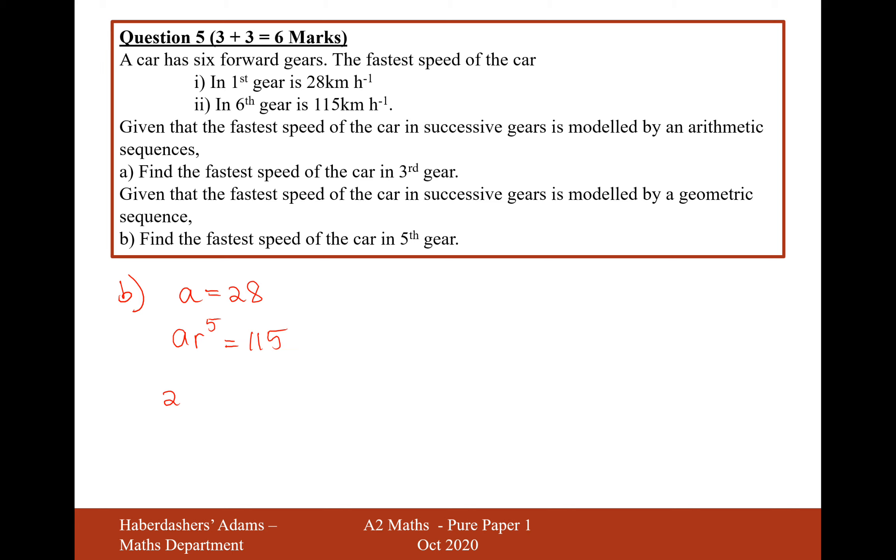So now substituting in A equals 28, we'll work out what R is equal to. So 115 divided by 28 is 4.107. So R to the power of 5 is 4.107.